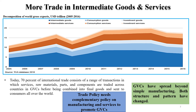Trade in intermediate goods and intermediate services are significantly high. Not just goods but intermediate services are also being traded. Almost 70 percent of international trade consists of a range of transactions which basically include services, raw materials, parts and components, and that has changed the character of international trade throughout the world.